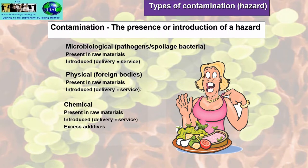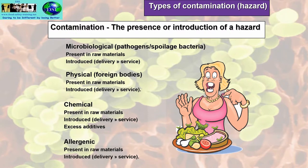Chemical contamination can be present in raw materials and introduced between delivery and service. One such chemical which could have adverse chronic effects is excess additives. Lastly, allergenic contamination is also present in raw materials and can be introduced between delivery and service.